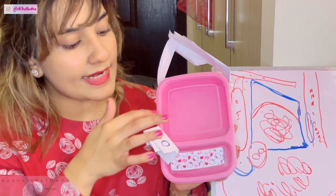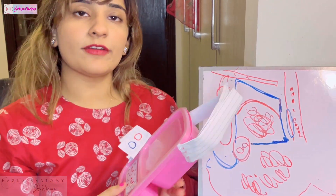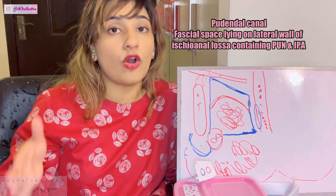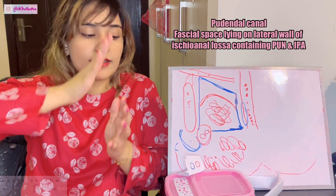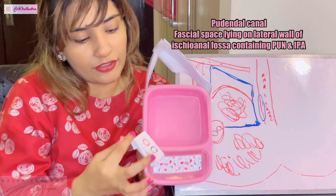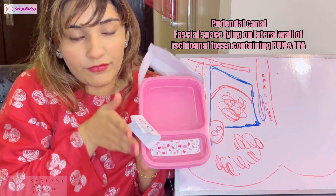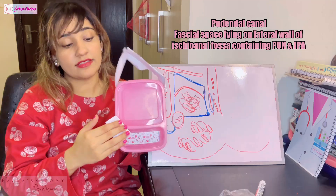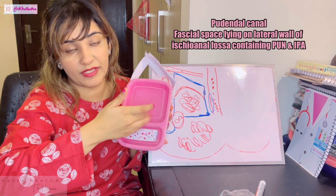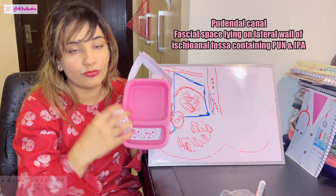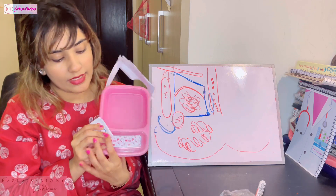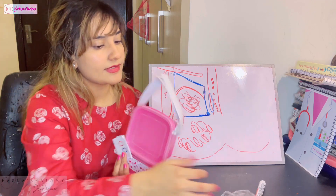The pudendal canal lies on the lateral wall of the ischioanal fossa. It is composed of different fascias: laterally is the fascia covering the obturator internus, the perianal fascia contributes inferiorly, and part of it is covered by the lunate fascia that forms the roof of the ischioanal space. All of these fascias combine to form this fascial canal known as the pudendal canal, containing the internal pudendal artery, pudendal nerve, and internal pudendal vein.